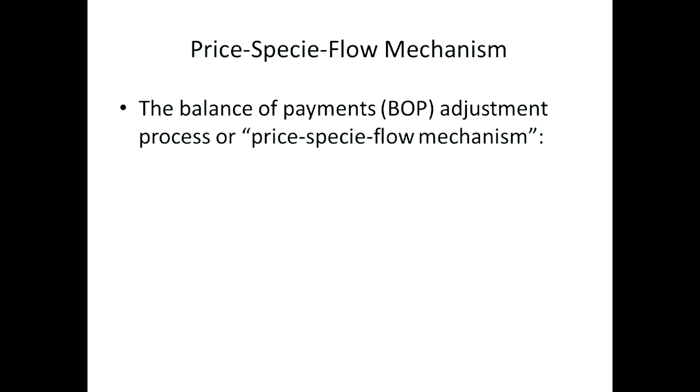Let me talk about the price specie flow mechanism, which was a mechanism that operated as the golden handcuffs on government. Specie is just another term for precious metals — gold and silver. This mechanism was really the balance of payments mechanism. BOP always stands in economics for balance of payments. This mechanism maintained, at least in the longer run, equilibrium in the balance of payments. It ensured that what was imported was paid for by real exports — the country couldn't continually run deficits under the gold standard, otherwise all its reserves would leave the system.